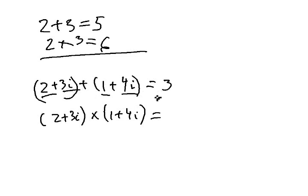2 plus 1 is 3. 3 plus 4 is 7. You just add 2 complex numbers. Very easy.